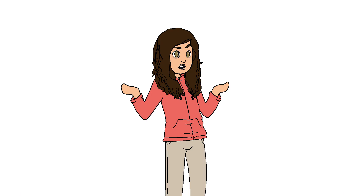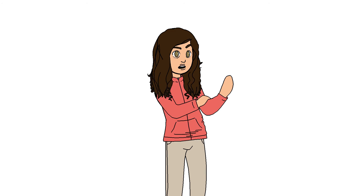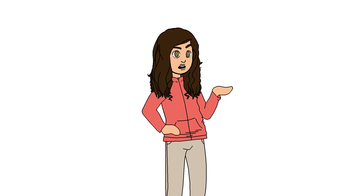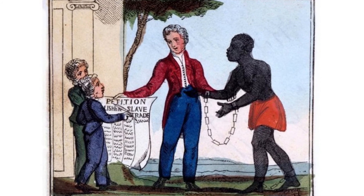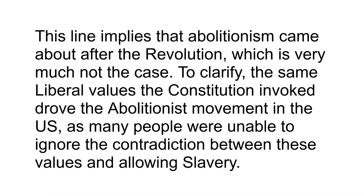Whether or not the Civil War could have been avoided remains an open question, but I believe that it was all but inevitable from the foundation of the country. The Southern reliance on slavery made it unlikely that they ever would have given up the institution freely, as slavery's continuation formed the very foundation of Southern society. It was equally inevitable that the abolitionist position would form, as the constitutional rights to life, liberty, and the pursuit of happiness were completely contradicted by the continuation of slavery.